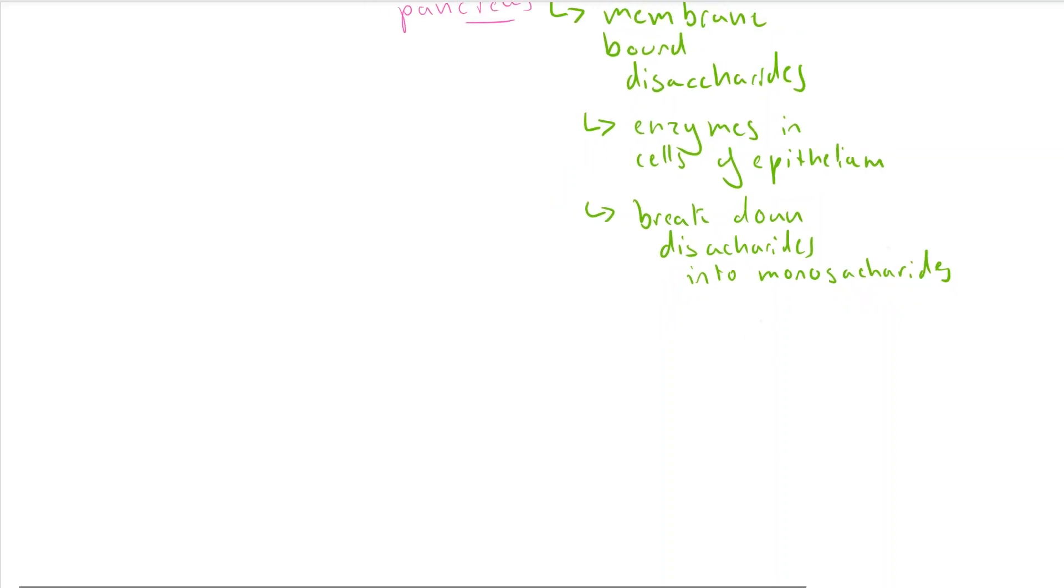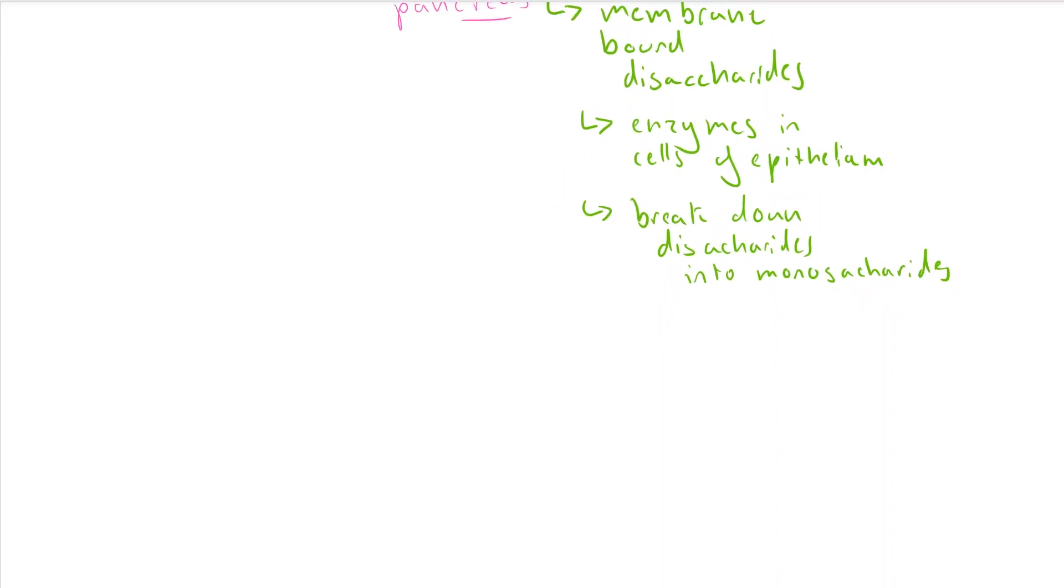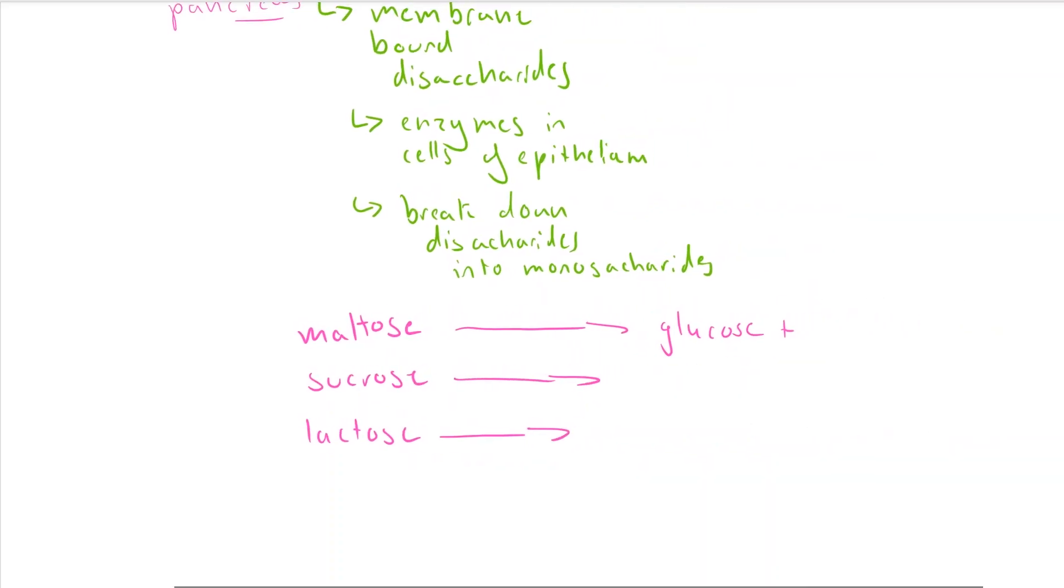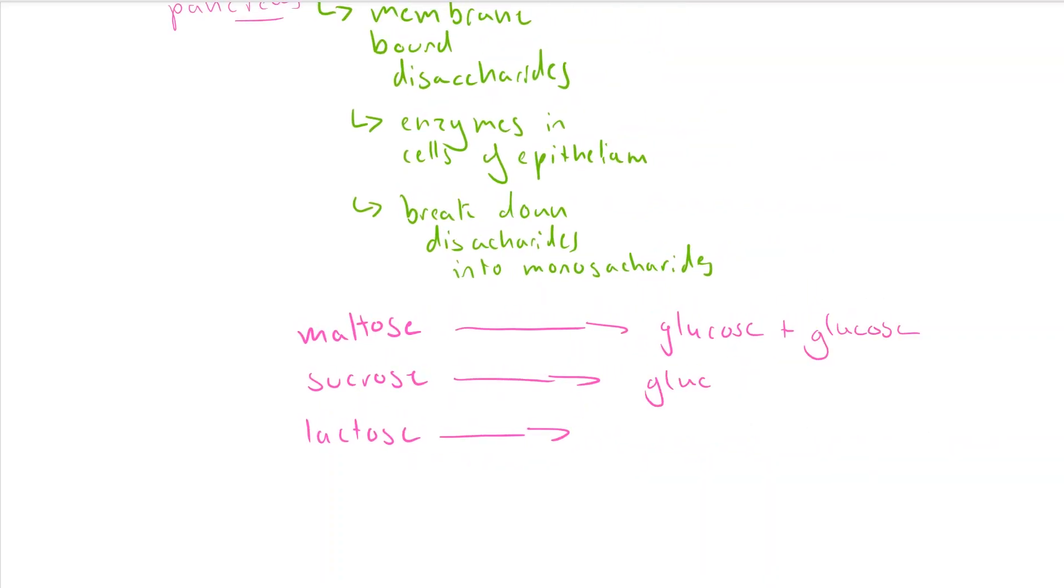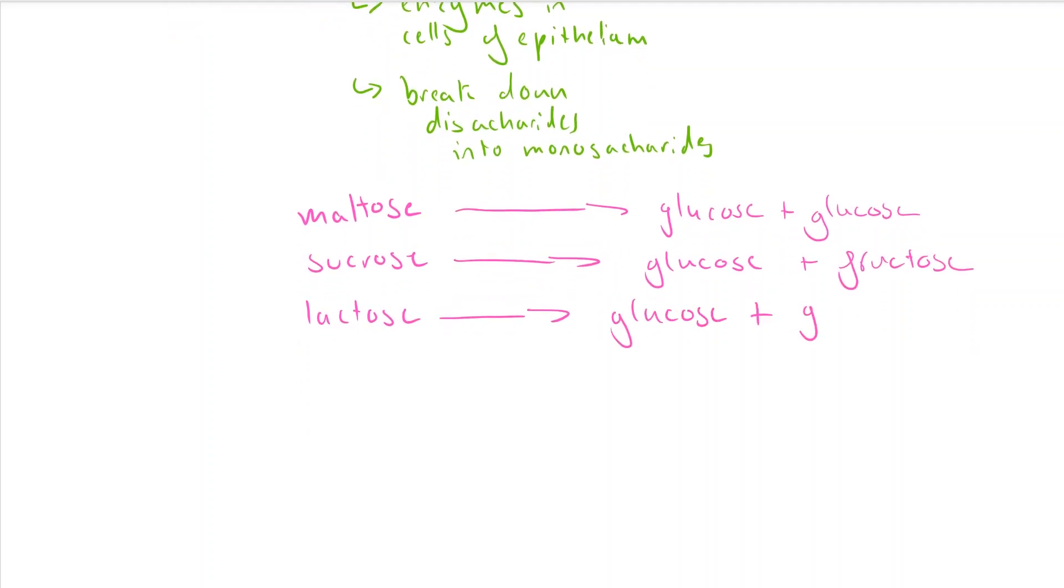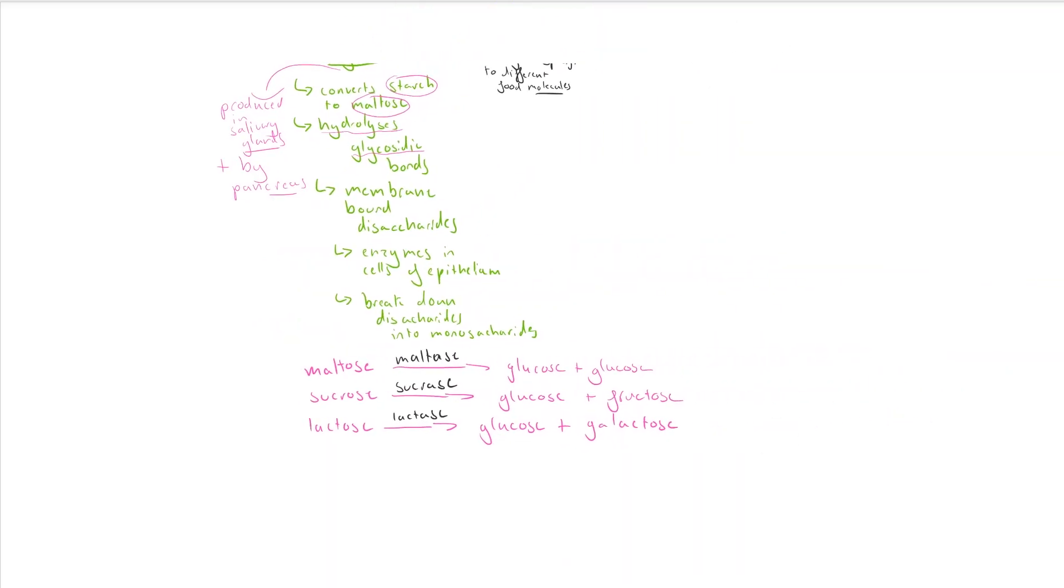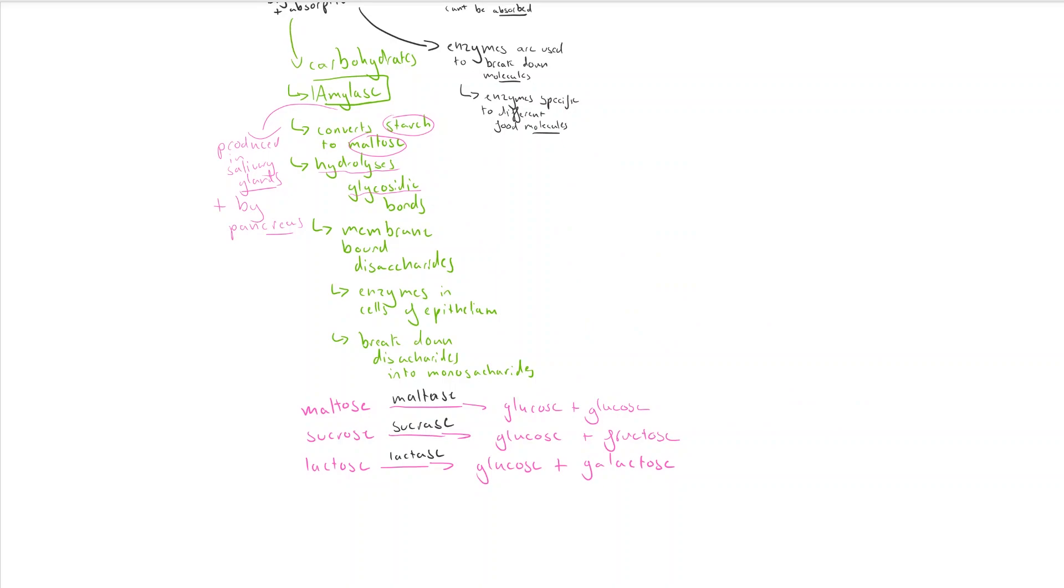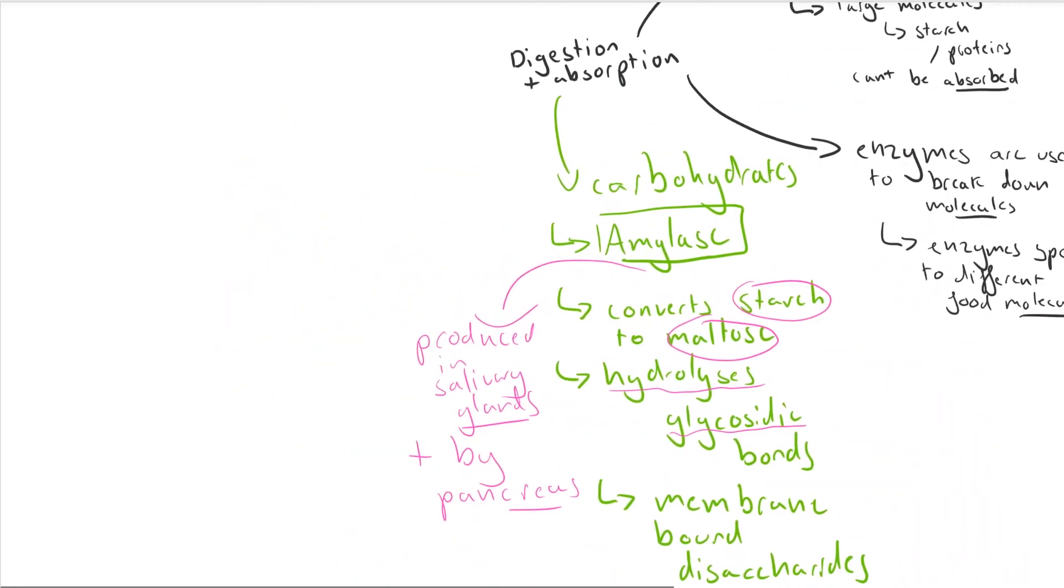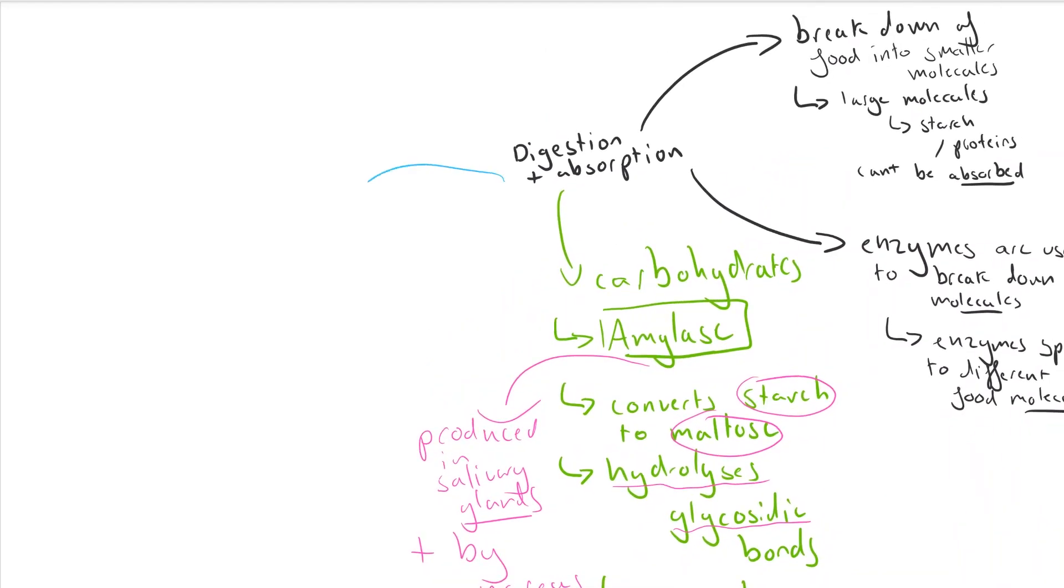These disaccharides are maltose, sucrose, and lactose—sugars with two monomers joined together by a single bond, while glucose is a monomer, a monosaccharide. What I'm writing out now is the three types of disaccharide you have to know and what they break down into. Maltose is two glucose monomers joined together. Sucrose, often found in plants, breaks down into glucose and fructose. And lactose, often found in milk, is broken down into glucose and galactose. The enzymes required are basically the same thing but with -ase on the end instead of -ose.